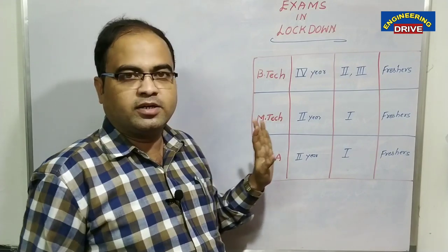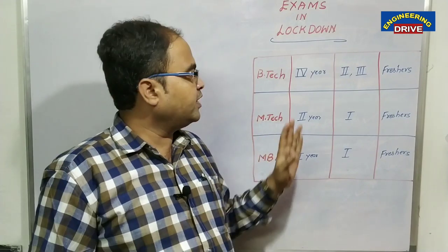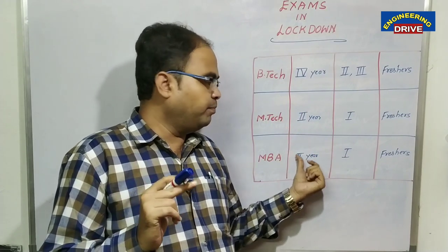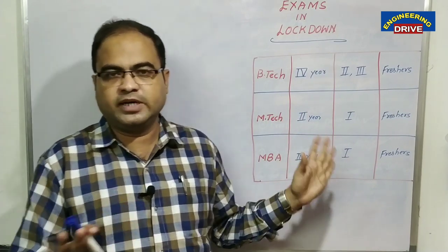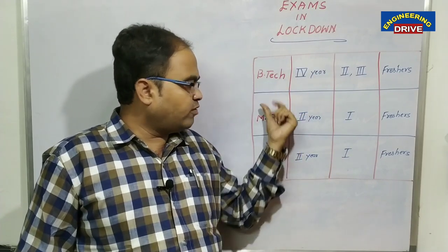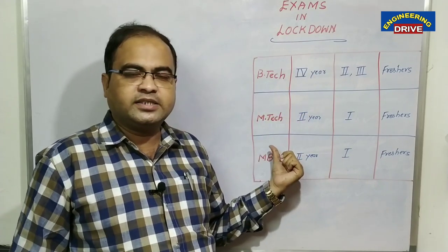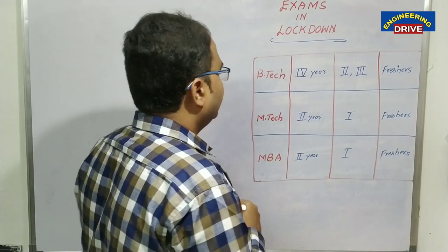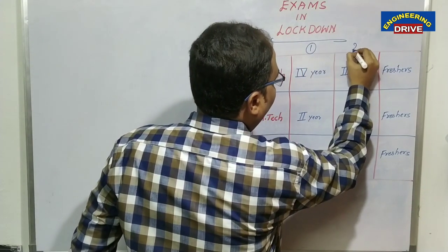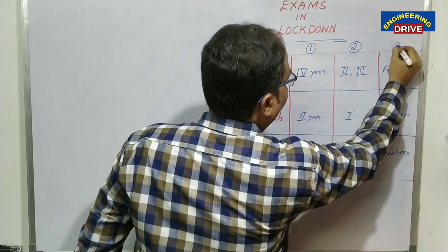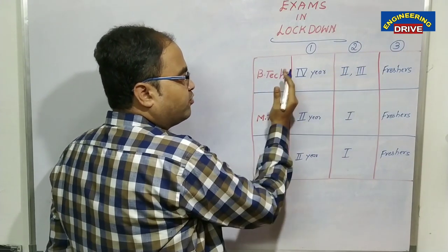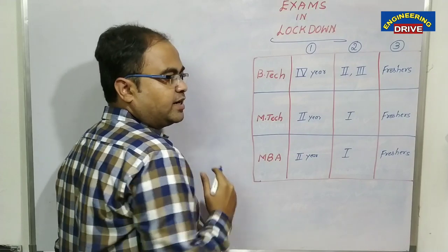The table covers B.Tech, M.Tech, and MBA. B.Tech is a 4-year course, M.Tech is 2 years, and MBA is also a 2-year course. For all three types of degrees, I have divided the discussion into 3 cases: case number 1, case number 2, and case number 3.